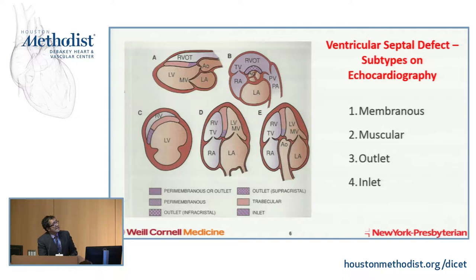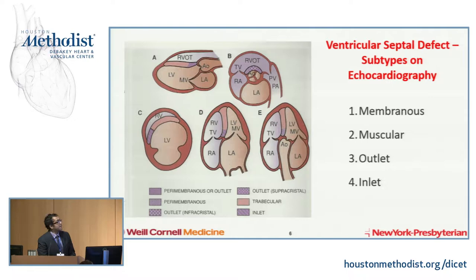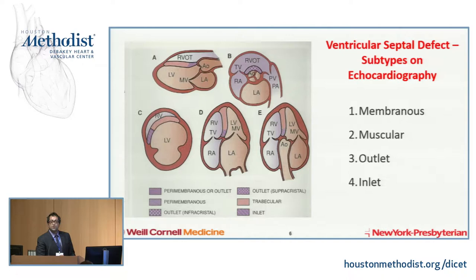When describing VSDs on echo, echo is the gold standard for diagnosis. The membranous septum is best seen in the parasternal long-axis view where you see the aortic valve — that part right by the aortic valve entering the RV. Similarly, in the apical five-chamber view the same region is the membranous septum. The outlet septum is best seen in the parasternal short-axis view where you see the pulmonary valve and the aortic valve next to each other. The inlet ventricular septum is best seen in the apical four-chamber view where you see the tricuspid valve and the crux of the heart — part of the endocardial cushion defects.